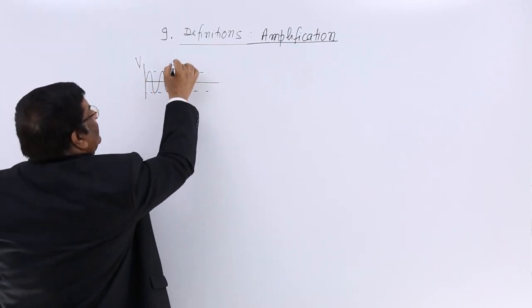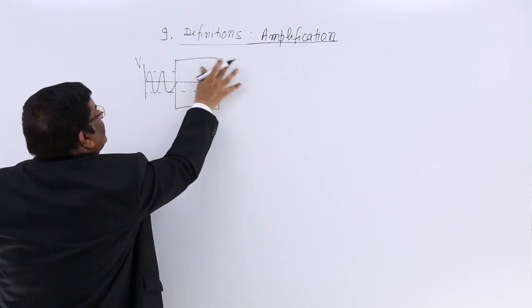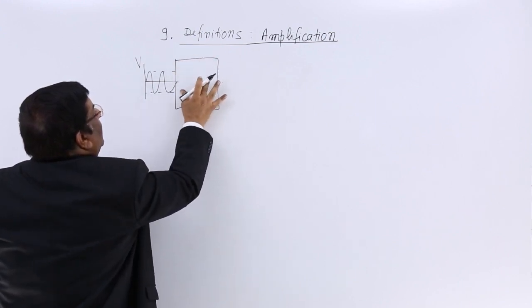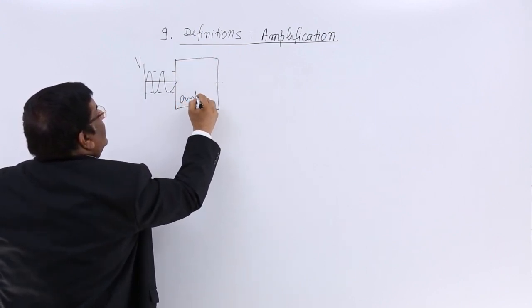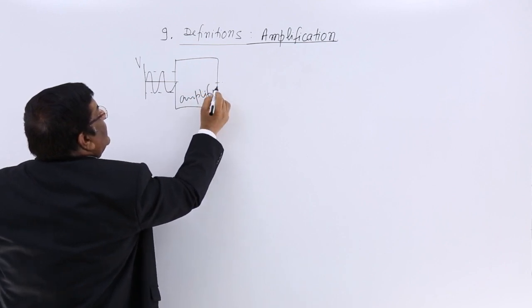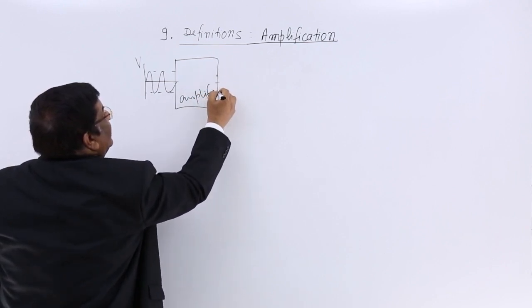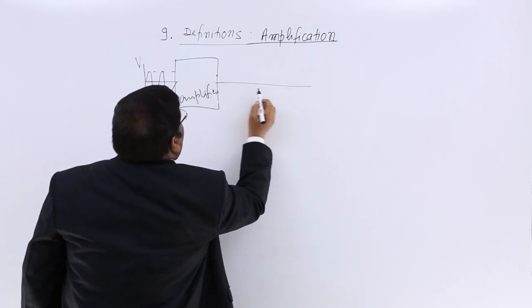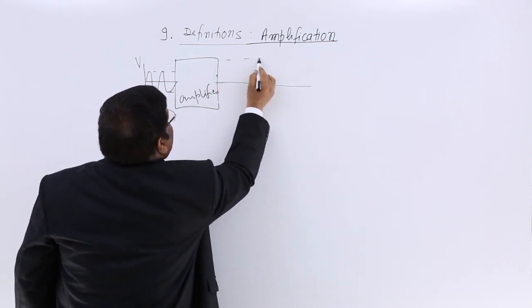I send it through a machine, this. This we call amplifier. Now from out I get the signals and this time if I make the graph of the signal, then it is like this.